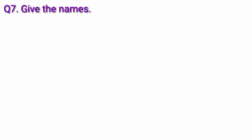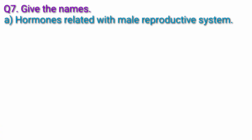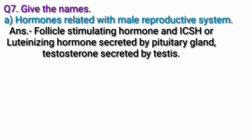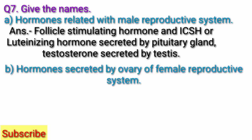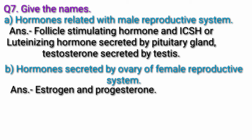Question 7: Give the names. A. Hormones related to the male reproductive system. Answer: Follicle Stimulating Hormone, ICSH or Luteinizing Hormone secreted by the pituitary gland, and Testosterone secreted by the testis. B. Hormones secreted by the ovary of the female reproductive system. Answer: Estrogen and Progesterone.